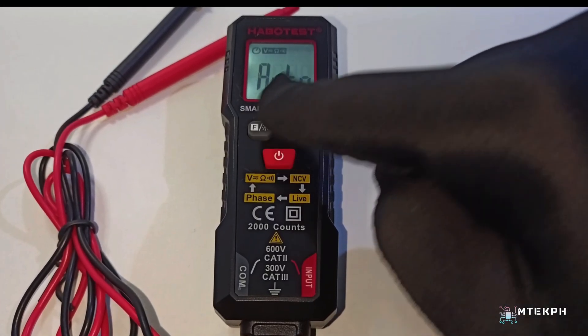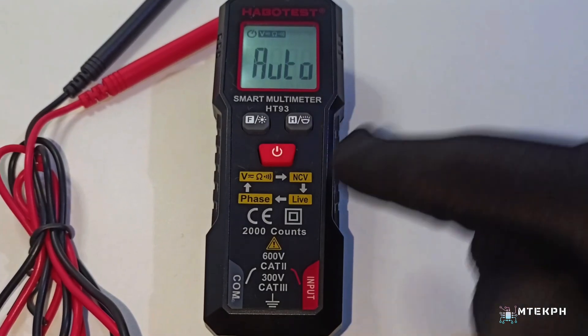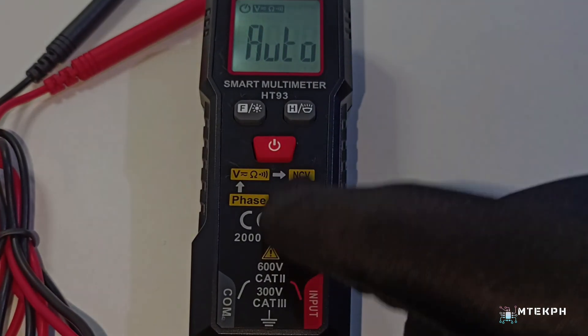On the screen, you'll see features like an auto-off function, AC-DC voltage, resistance, and continuity.